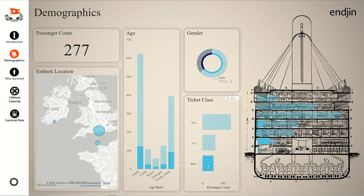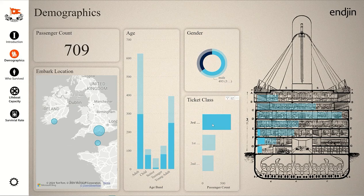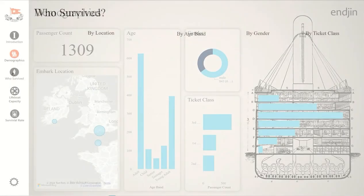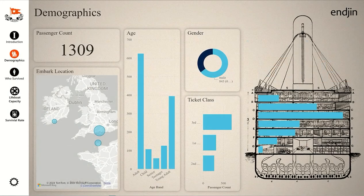The embark location shows where the passengers boarded the Titanic: Cherbourg, France; Southampton, UK; or Queenstown in Ireland. The chart shows you how many passengers boarded in each class, with a passenger count and proportion of male to female passengers in each class.